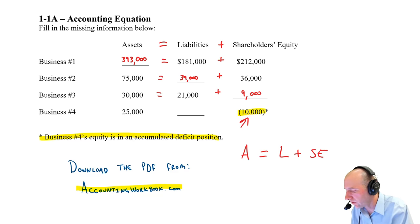So, business number four, the liabilities have got to be $10,000 higher than the assets. How do I know that? Because the equity is negative $10,000. So, if the assets are $25,000, the liabilities have got to be $35,000, $10,000 more.